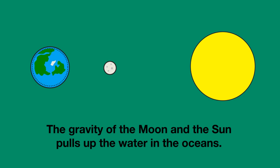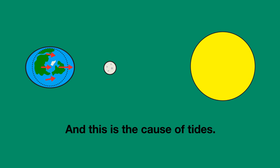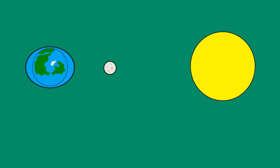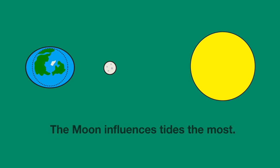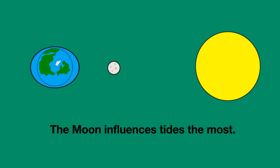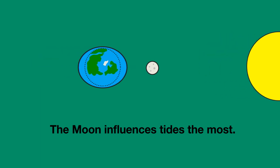The gravity of the Moon and the Sun pulls the water in the oceans, and this is the cause of tides. The Moon influences the tides the most, so let's first look at the Moon.